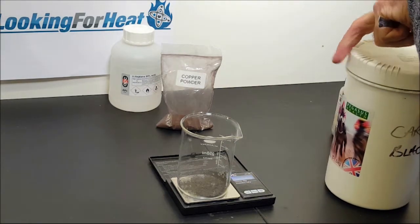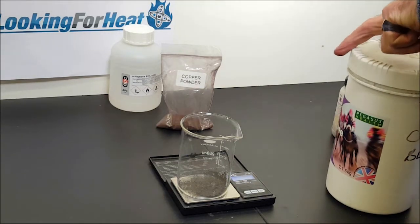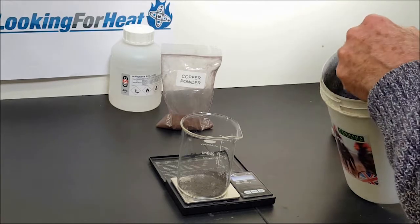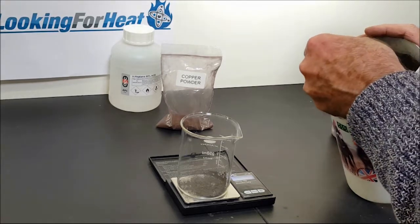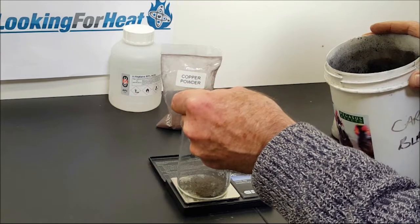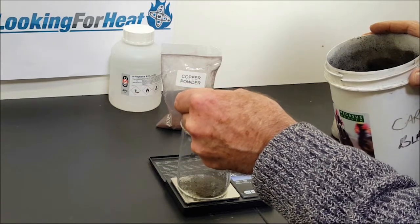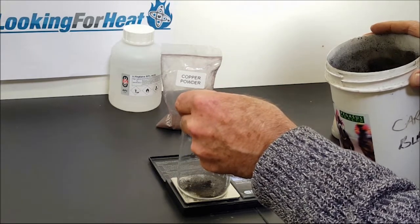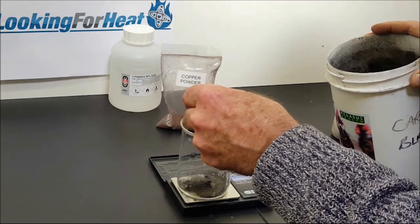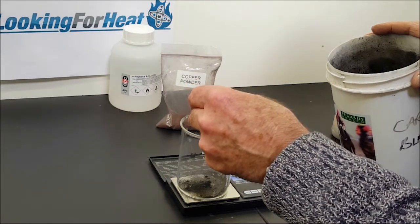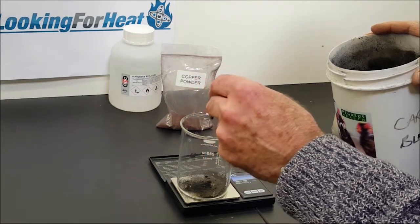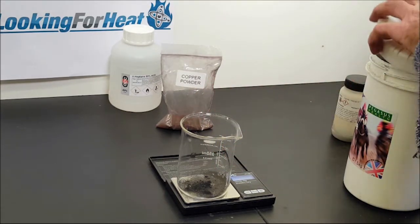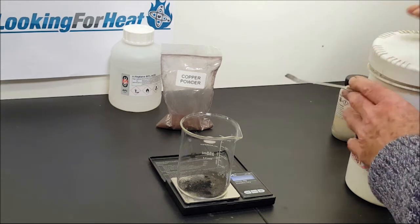The next step is to add 0.1 of a gram of carbon black. This is amorphous carbon black, very fine particles. There's a particular kind known as gas black because it's made by using a flame.